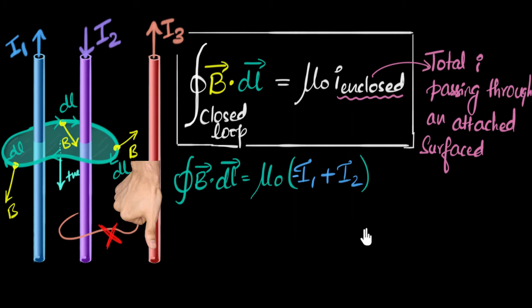Why don't you quickly try one? So let's say, let's take another loop, which is over here. I'm gonna take a rectangular loop because shape doesn't matter. So let's say we take a rectangular loop somewhat like this.